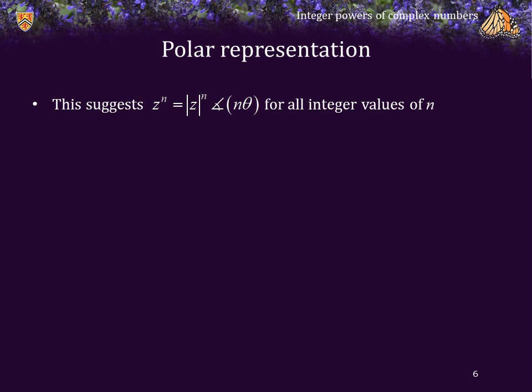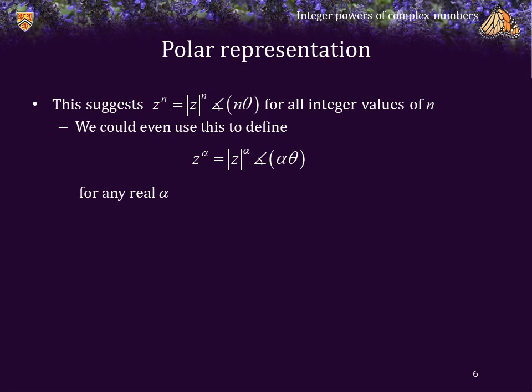This suggests that z to the n should be calculable as the magnitude raised to the power n, phase n theta, for all integer values of n. What's even more interesting is that we could use this to define z to the alpha for any real alpha as well. But in this course we're going to restrict ourselves to polynomials, which only require integer exponents.